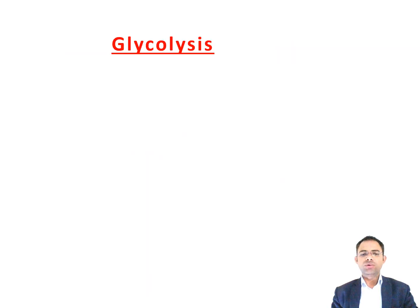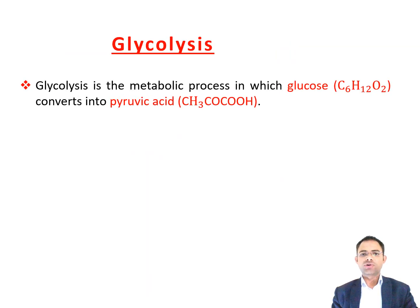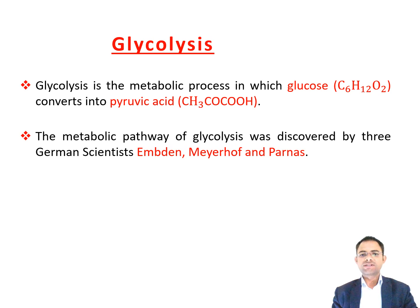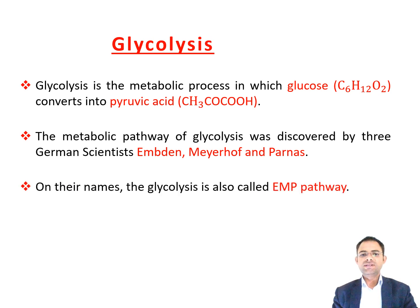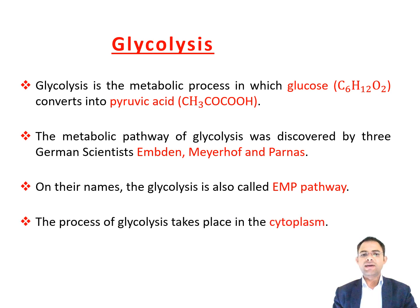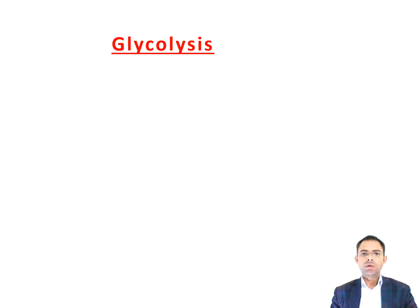Glycolysis is the metabolic process in which glucose converts into pyruvic acid. The metabolic pathway of glycolysis was first discovered by three German scientists: Embden, Meyerhof, and Parnas. On their names, the glycolysis is also called the EMP pathway. The process of glycolysis takes place in the cytoplasm of a cell, where glucose is oxidized into pyruvic acid in the presence of many enzymes and coenzymes.